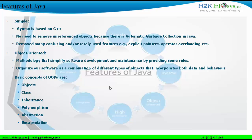In OOP, objects are entities that have a class and properties. Properties can be methods or variables. The core concepts of object-oriented programming we need to understand are: objects, classes, inheritance, interfaces, polymorphism, abstraction, and encapsulation. We will look at all of these at a later point in time.